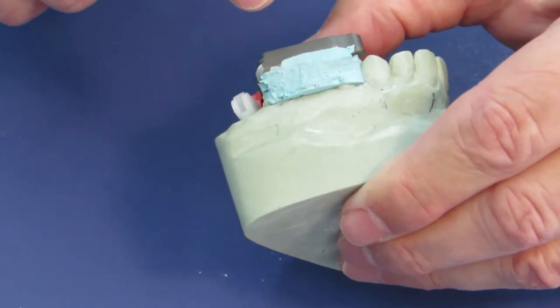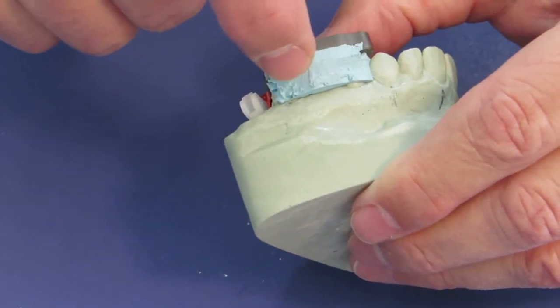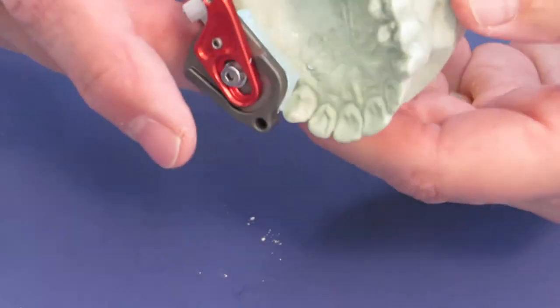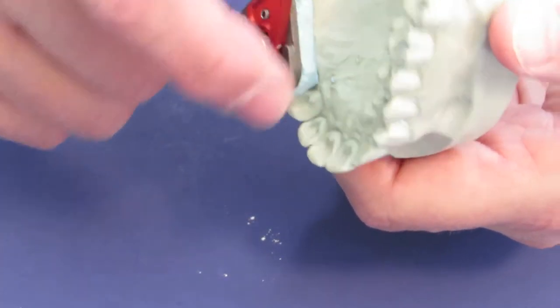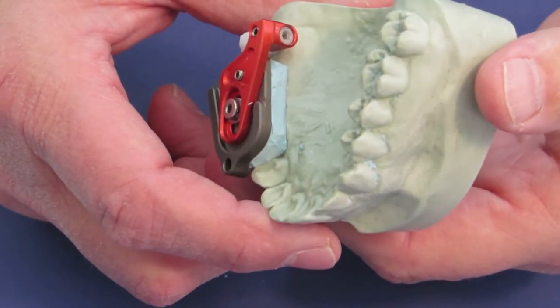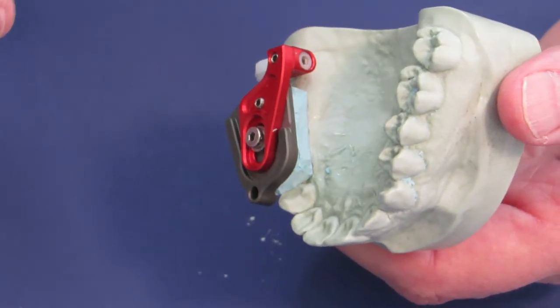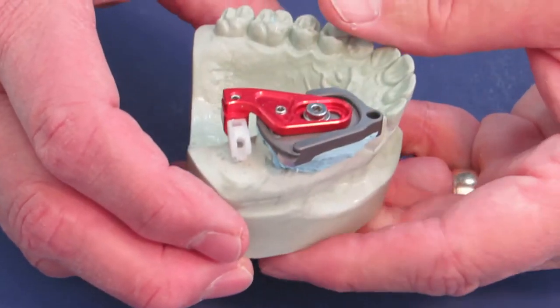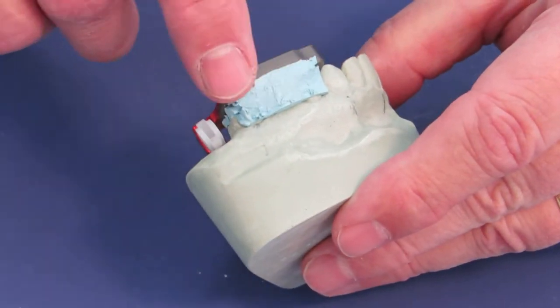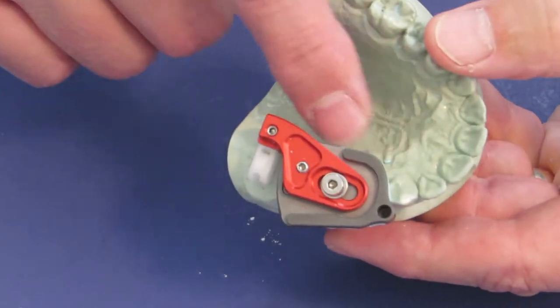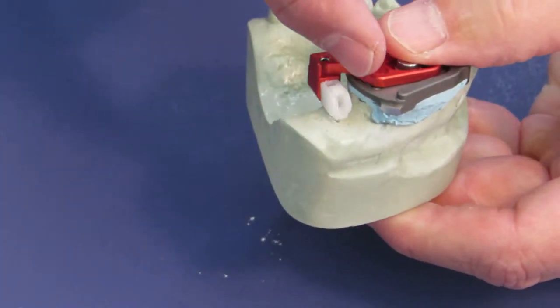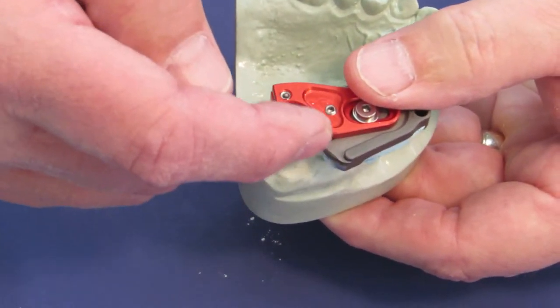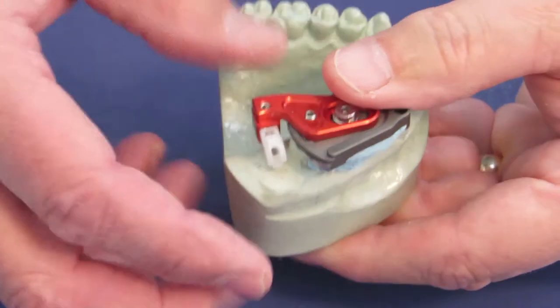Sometimes I add a little bit of extra bite paste here on the buccal or on the lingual side to give it a lot of grasp and security. After that hardens I can take a burred parker and just clean off any excess so that it is easier and make sure that there is no paste here where the arm is going to swing.